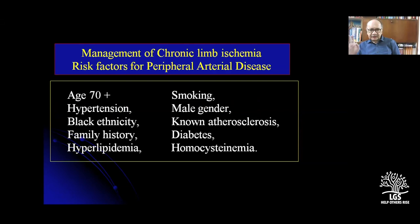Identify the risk factors for peripheral arterial disease. The risk factors are the following ten: age of 70 plus has got high risk; hypertension; black ethnicity; family history; hyperlipidemia; elevated triglycerides; smoking; male gender; non-atherosclerotic lesions in the family; and diabetes. Thrombophilia and homocysteinemia produce gangrene in the younger age group — patients in their 20s and 30s developing TAO and atherosclerotic blocks are because of homocysteinemia. S proteins, C proteins, anti-cardiolipin antibodies are all young homocysteinemias.